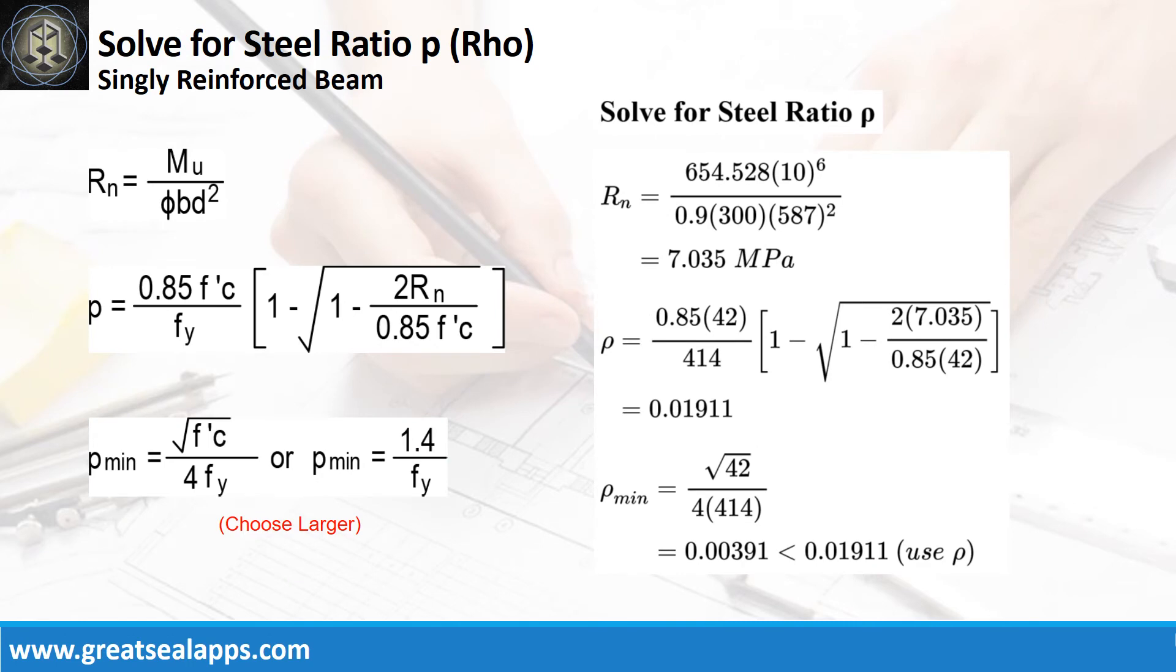Given maximum moment equals 654.528 kN·m, resistance factor equals 0.9, b equals 300 mm, and d equals 587 mm. The beam design ratio RN equals 7.035 MPa and reinforcement ratio ρ equals 0.01911.